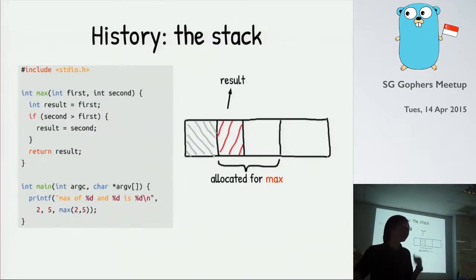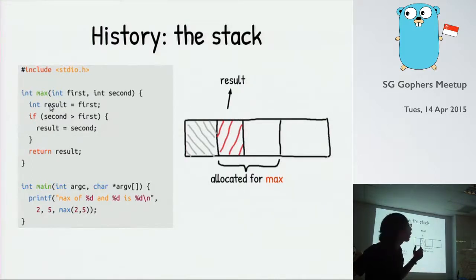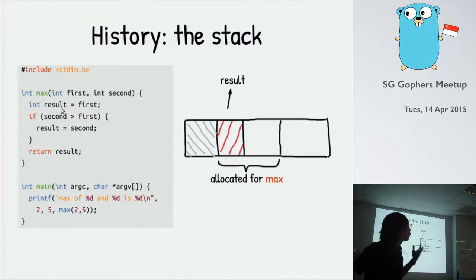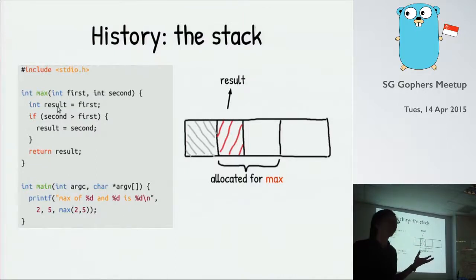If you come from a C or C++ background, you used to have to allocate and de-allocate memory manually. You'd remember there are two things: the stack and the heap. If you call a function and declare something in it — for example, this simple program finding the max of two numbers — in C if you declare something in the function, it basically lives on the stack. The stack is just a space in virtual memory where you allocate that variable, and when you exit the function the stack space for that function gets de-allocated. This is why in C you cannot access a variable from another function — it's like a local variable.